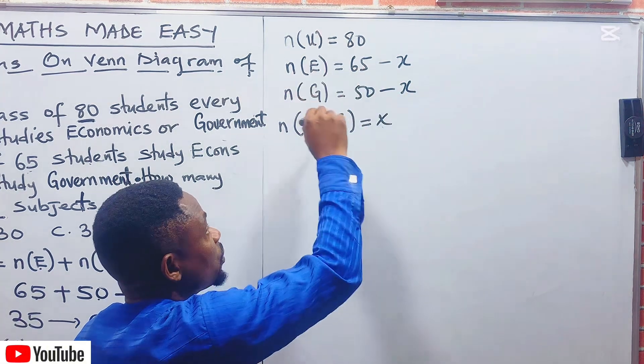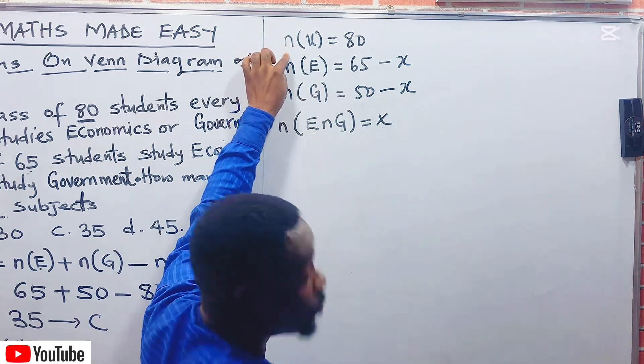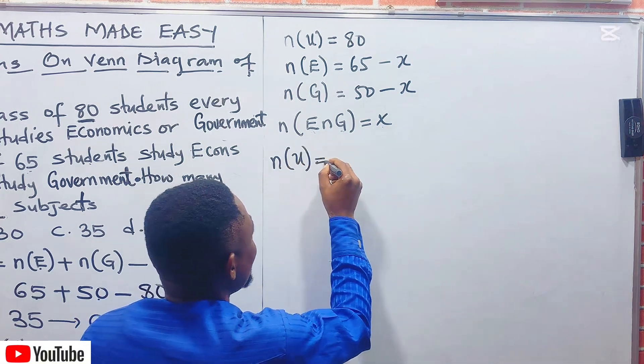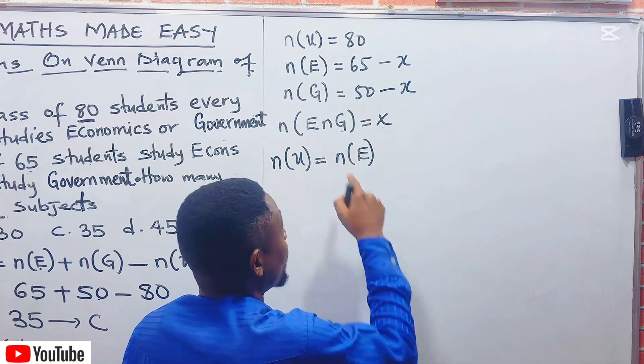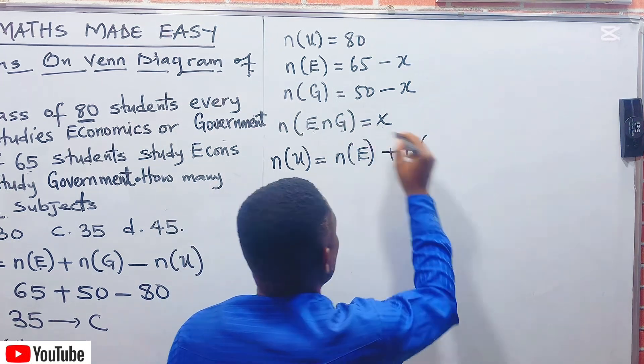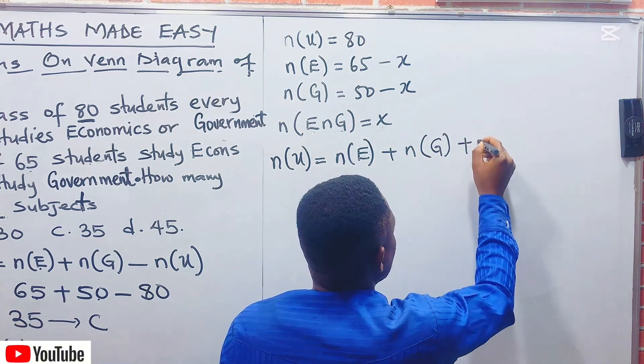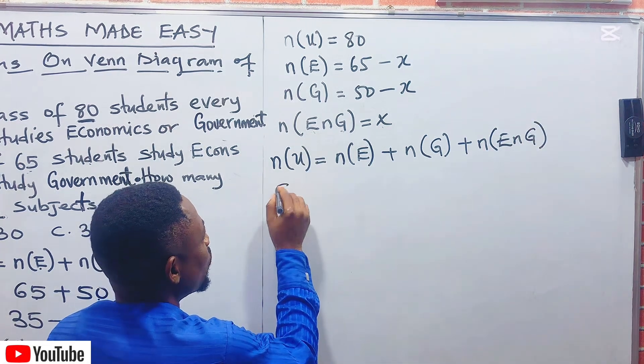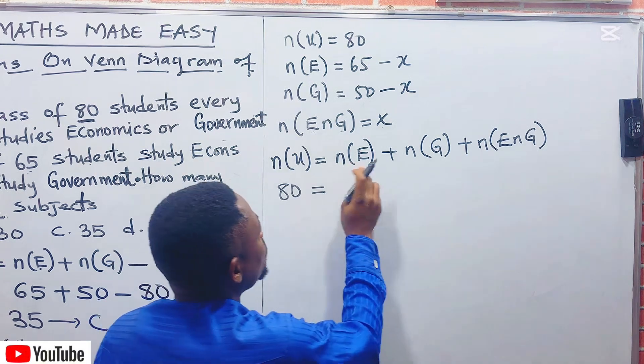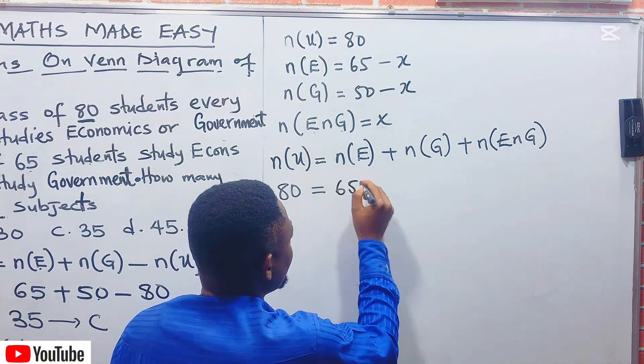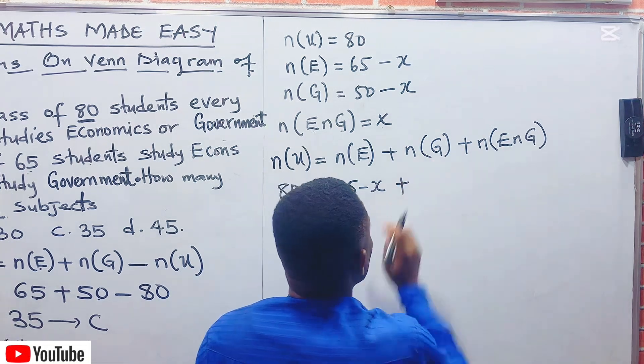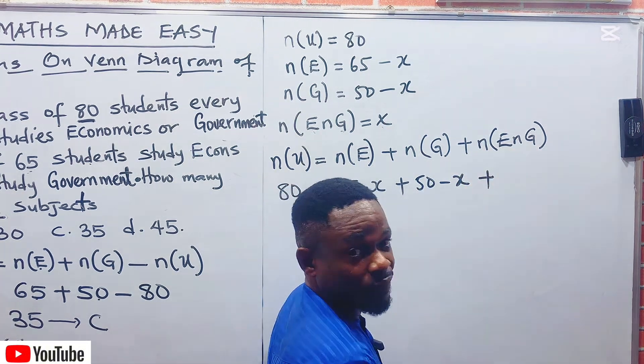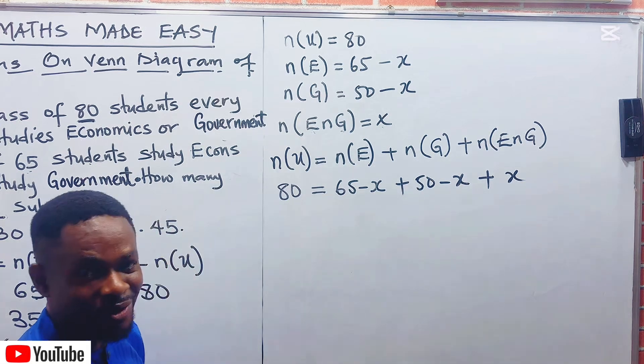What do we do? We now summon the whole team. Remember, when you add one, two, three, it will produce the universal set. The number of the universal set is now equal to the number that offered Economics only, which is 65 minus X, plus the number that offered Government only, which is 50 minus X, then plus the number that offered Economics and Government, which is X. The universal set is 80, equal to 65 minus X plus 50 minus X plus X. Minus X and plus X cancel. Then what is remaining? 80 equal to 65 plus 50, which gives you 115 minus X.